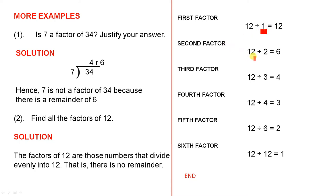The second factor: 12 divided by 2 equals 6, so the second factor is 2. For the third factor: 12 divided by 3 equals 4, so the third factor is 3. The fourth factor: 12 divided by 4 equals 3, so the fourth factor is 4.